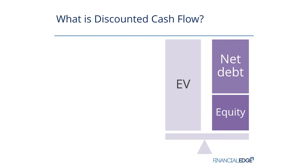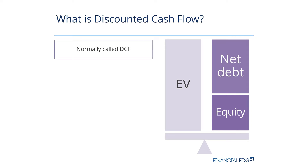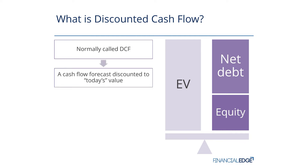The enterprise value represents the net operating assets of a business, and by doing a discounted cash flow we will first work out the value of those net operating assets. It's normally shorthand as a DCF, and it takes a cash flow forecast and discounts that back to today's value.